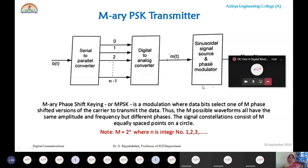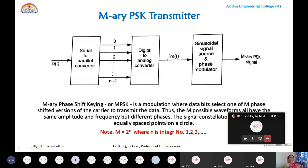The M possible waveforms all have equal amplitude and frequency but different phases. The signal constellation consists of M equally spaced points on a circle — M symbols each with a different phase. M = 2^n where small m ranges from 0 to M−1. This is the generalized block diagram of any M-ary transmission technique.